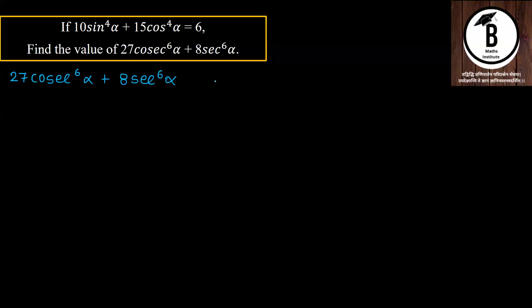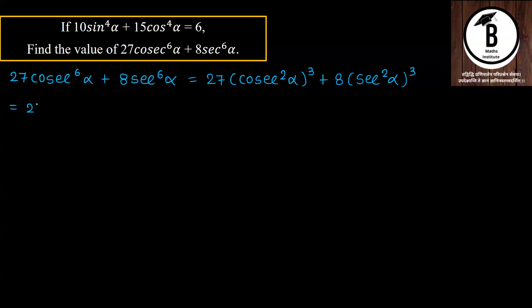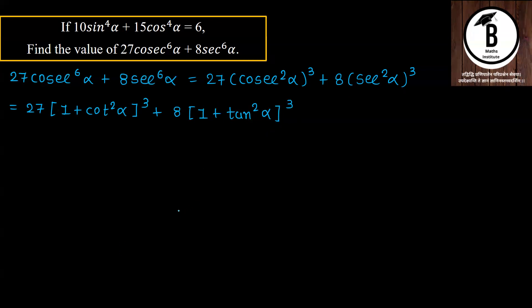6th power के लिए हमारे पास कोई formula नहीं है, formula हमारे पास square power के लिए है। तो इसको square power में convert करते हैं: 27(cos²α)³ plus 8(sec²α)³। cos²α की formula है 1 + cot²α और sec²α की formula है 1 + tan²α — दोनों उल्टी formula हैं एक दूसरे से।